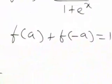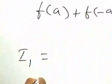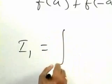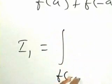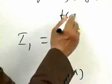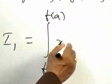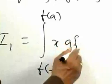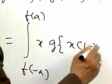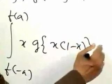Now take i1 equal to integral f of minus a, f of a, x into g of x into 1 minus x dx.